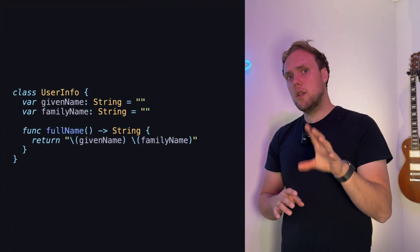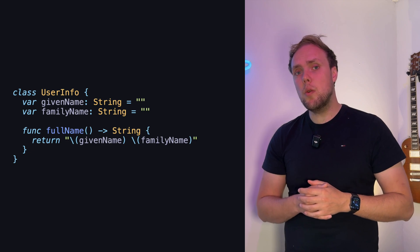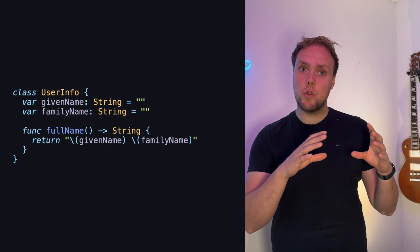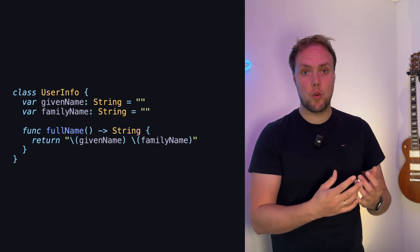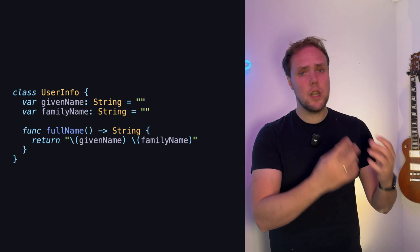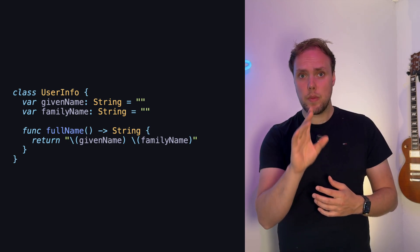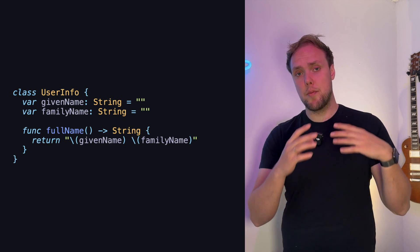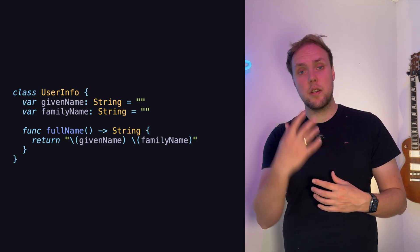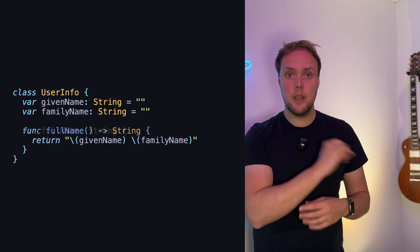This is good, but did you know that Swift has computed properties which allow us to read the full name just like we would read family name or given name? But we could actually make it so that this property is derived from the other two. That's done using a computed property and it looks like this.